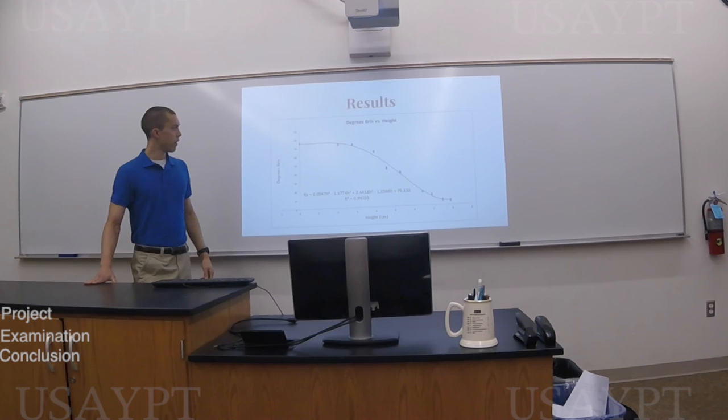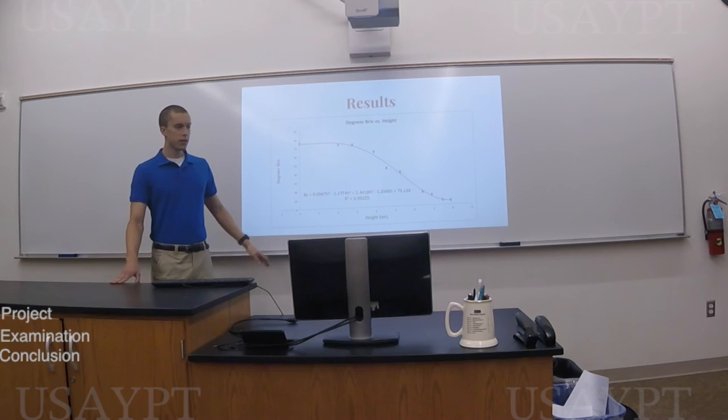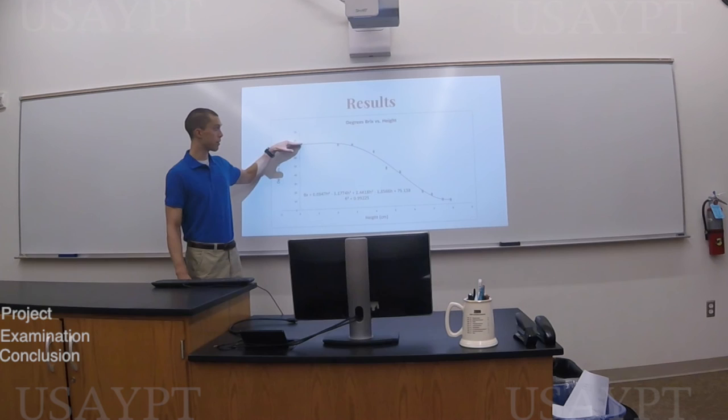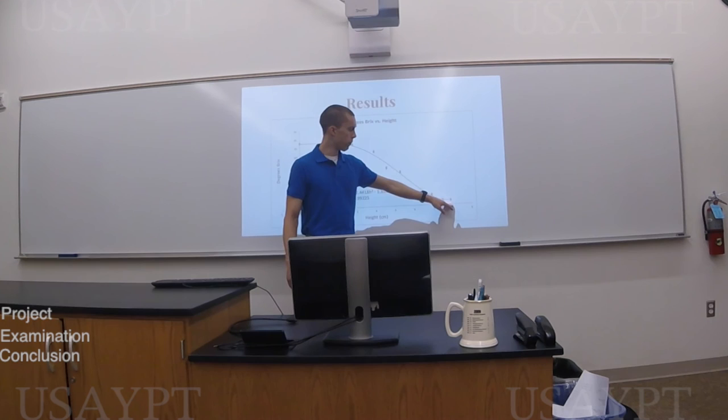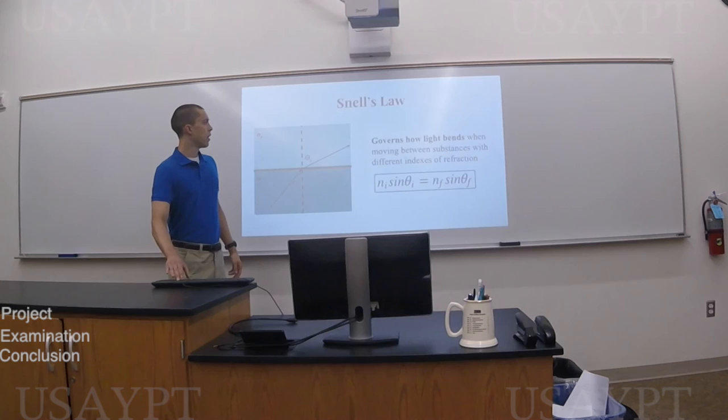We have 12 trials here. The height is in centimeters — the bottom of the tank is where we would expect to have the highest index of refraction. This is measured in degrees Brix, but that corresponds to the index of refraction. So height in degrees versus the higher index of refraction, and then on towards the top of the tank — the top of the solution was about 8 centimeters.